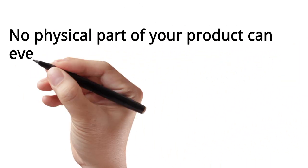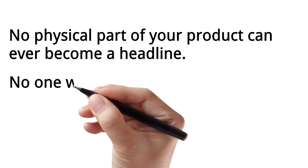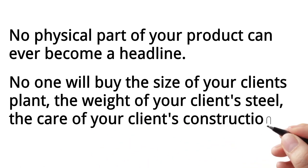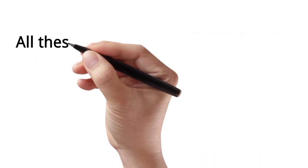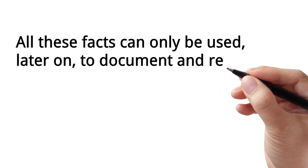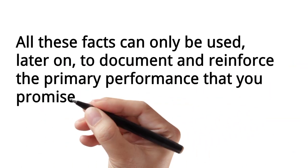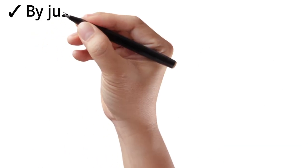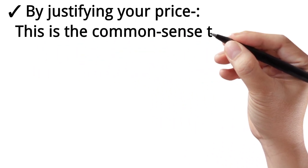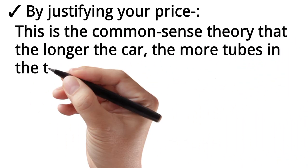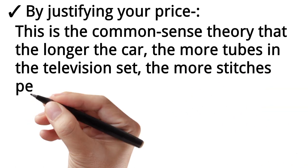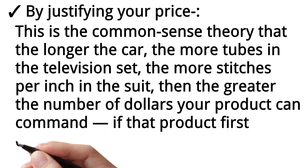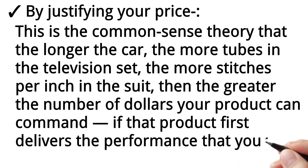No physical part of your product can ever become a headline. No one will buy the size of your client's plant, the weight of your client's steel, the care of your client's construction. All these facts can only be used later on to document and reinforce the primary performance that you promise your reader in your headline, in the following ways. By justifying your price. This is the common sense theory that the longer the car, the more tubes in the television set, the more stitches per inch in the suit, then the greater the number of dollars your product can command, if that product first delivers the performance that your prospect demands.